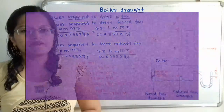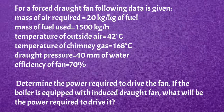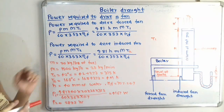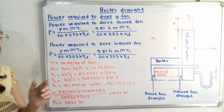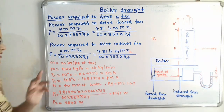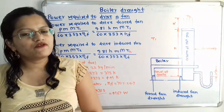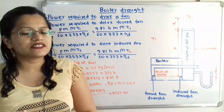Problem: For a forced draft fan, the following data is given — mass of air required: 20 kg per kg of fuel; mass of fuel used: 1500 kg/hr; temperature of outside air: 42°C; temperature of chimney gas: 168°C; draft pressure: 40 mm of water; efficiency of fans: 70%. Determine the power required to drive the fan. If equipped with induced draft instead of forced draft, what power is required? Mass of air m = 20 kg/kg of fuel; mass of fuel M = 1500 kg/hr.